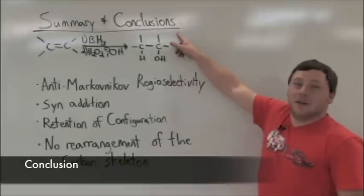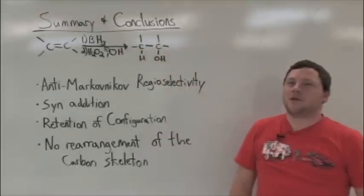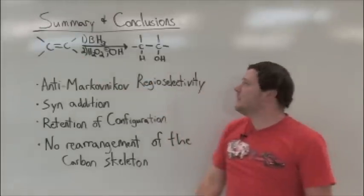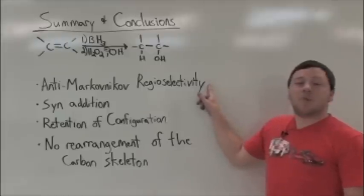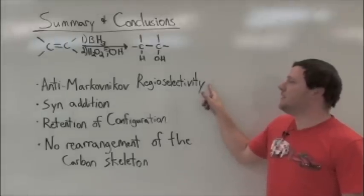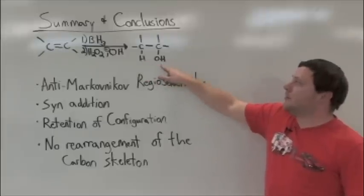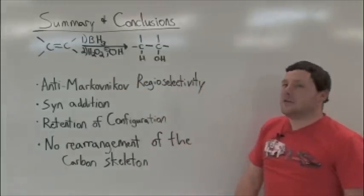Summary and conclusions. The hydroboration oxidation reaction is a two-step reaction which converts alkenes to alcohols. Remember, it has anti-Markovnikov regioselectivity and syn addition, where both fragments are added across the pi bond on the same side.